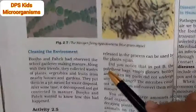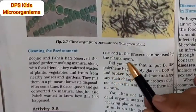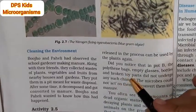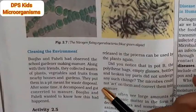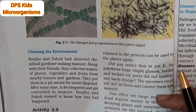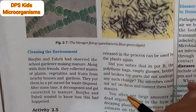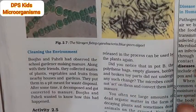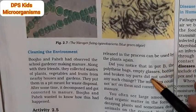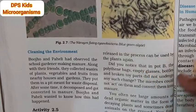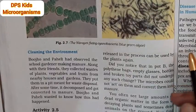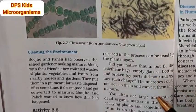Bujo and Paheli had observed the school gardener making manure. Manure means food. Along with their friends, they collected waste of plants, vegetables and fruits from nearby houses and gardens. They put them in a pit made for waste disposal. After some time, it decomposed and got converted to manure. Bujo and Paheli wanted to know how this had happened.